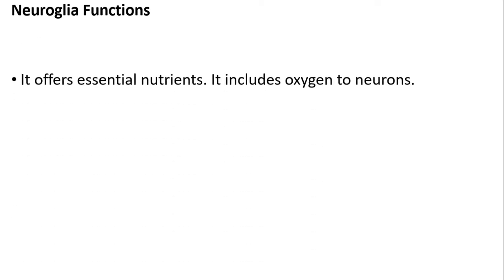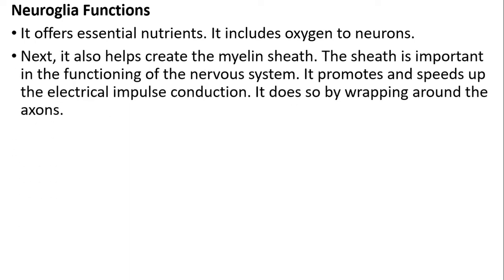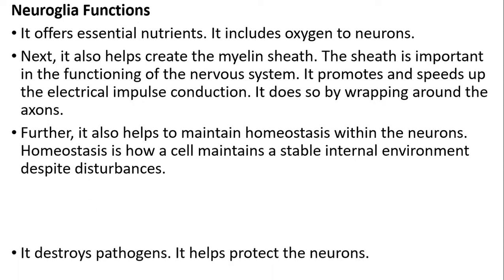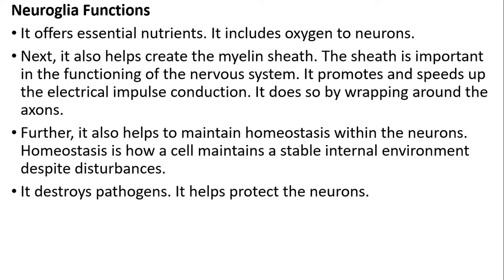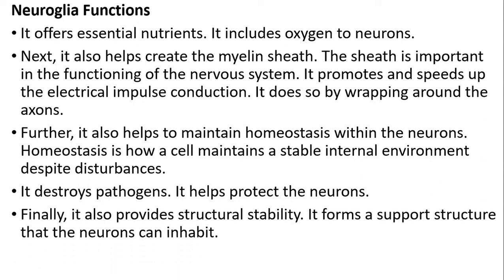Neuroglia functions: it offers essential nutrients including oxygen to the neurons. It helps to create a myelin sheath, which is important in the functioning of the nervous system. It promotes and speeds up electrical impulse conduction by wrapping around axons. It also helps to maintain homeostasis within the neurons — homeostasis is how the cell maintains a stable environment despite circumstances. It destroys pathogens and helps to protect the neurons. Finally, it also provides structural stability, forming support structures that neurons can inhabit.